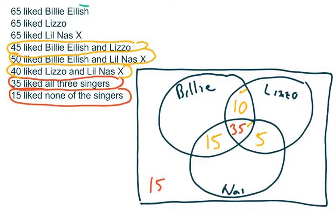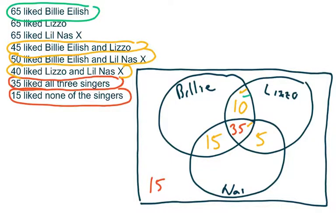You have to be careful not to overcount. 65 people like Billie Eilish, but 65 has to encompass all numbers within Billie's circle. We've already accounted for 10 here, 35 in the middle, and 15 here — that's 60 so far. So there are only 5 more people left, representing people who like Billie Eilish only, but not the other two singers.